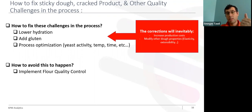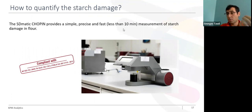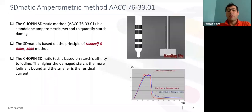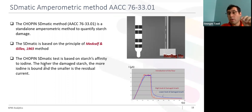Today I would like to propose the SD-MATIC to quantify starch damage. The SD-MATIC provides simple, precise, and fast results — you will have your answer in less than 10 minutes — and this method is compliant with many standards. The principle of the SD-MATIC is based on the method of Midcalf and Jill. The SD-MATIC measures the affinity of starch to iodine: the higher the damaged starch, the more iodine is bound to the starch, and the smaller the measured residual current.